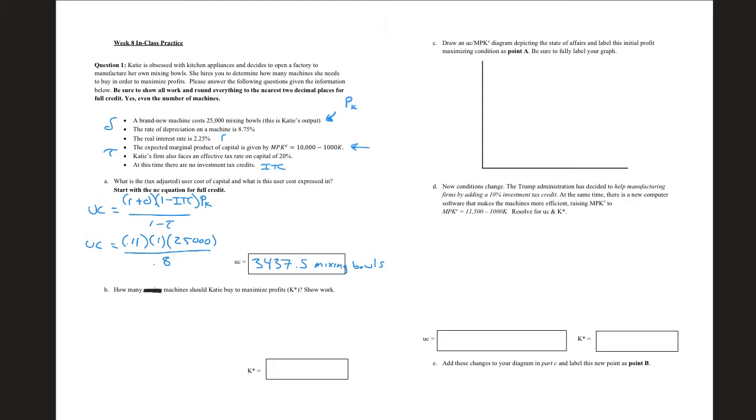So 3437.5 mixing bowls. Now how many machines should we buy to maximize profits? Well, this is our basic profit maximizing idea where we want to have marginal benefit equaling marginal cost. So what's our marginal benefit? Well, our marginal benefit is this MPKE. It's 10,000 minus 1,000K.